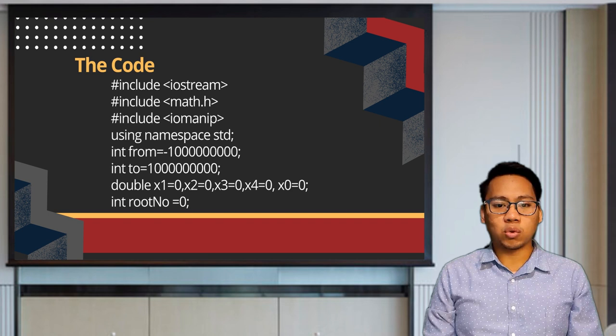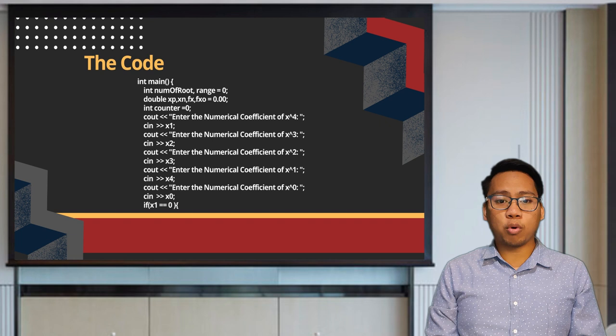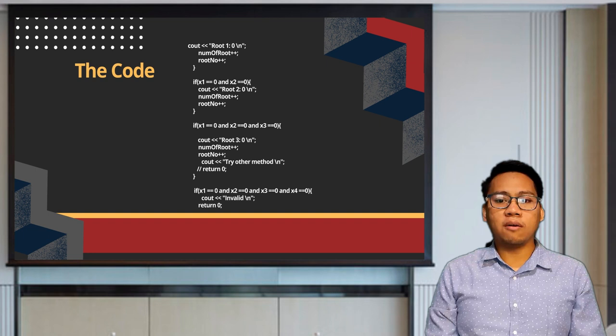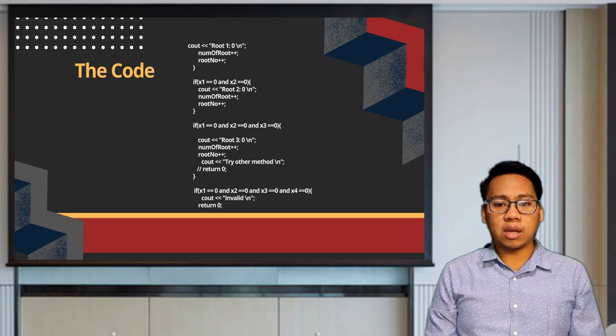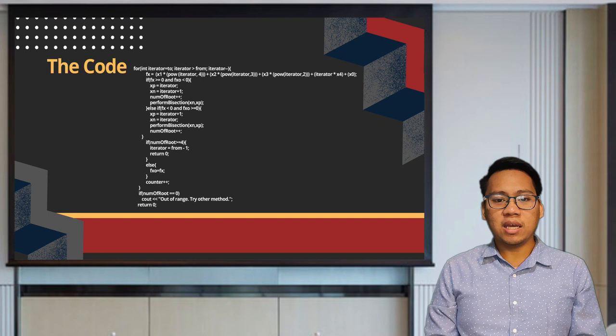It is where the value of the numerical coefficient will be stored. The boundary is set from positive to negative 1 billion. The numerical coefficient of the polynomial equation is to be inputted by the user. In this program, 4 roots are expected to be computed. If the numerical coefficient for a particular degree is zero, it will automatically exclude it from the computation of the root. For example, if the coefficient of x raised to 4 is zero and the others are non-zero, only 3 roots will be computed.